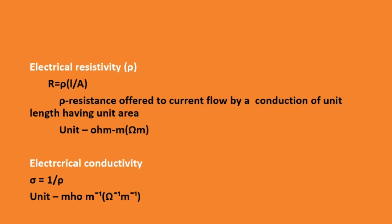Next one is electrical conductivity. Electrical conductivity is the reciprocal of electrical resistivity. So electrical conductivity sigma equal to 1 by rho. The unit of sigma is mho per meter, that is mho meter minus 1, since mho is the reciprocal of ohm.